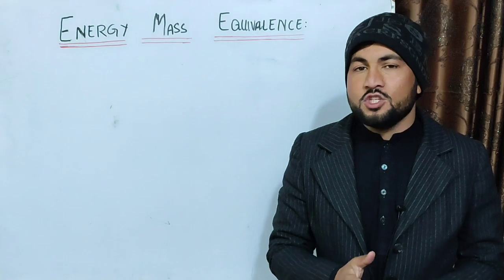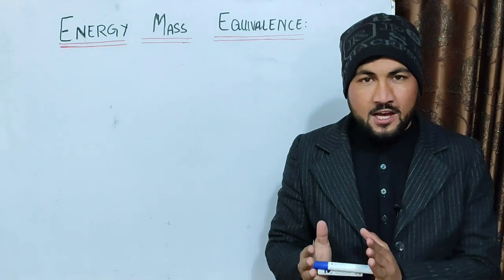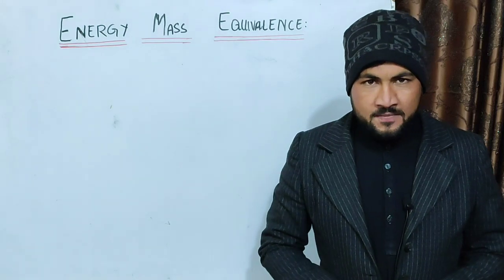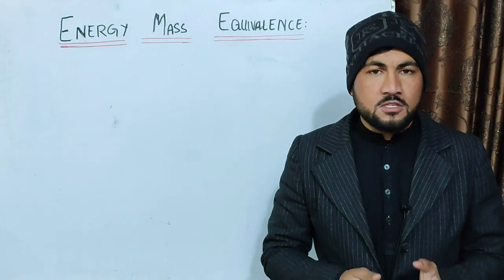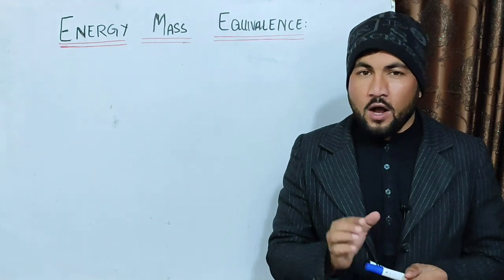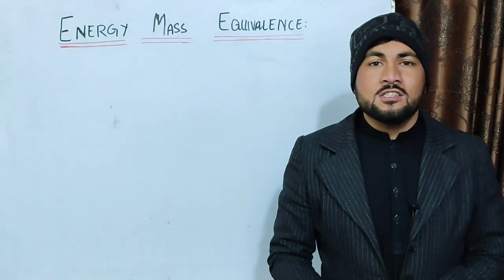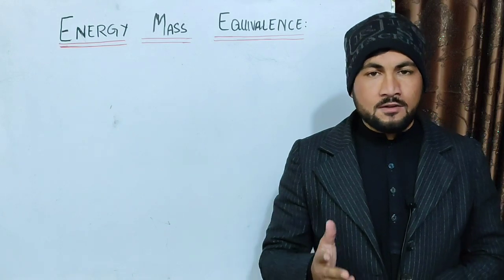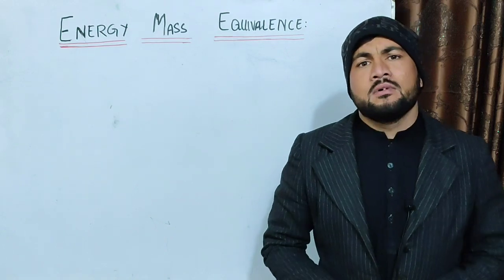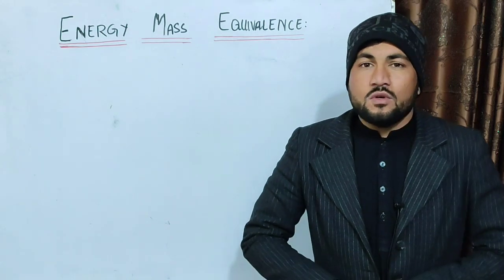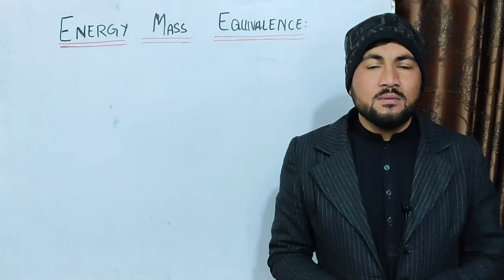Mass and energy equivalence. The famous Einstein equation is E is equal to mc squared. This is the equation of the energy-mass equivalence, E is equal to mc squared.